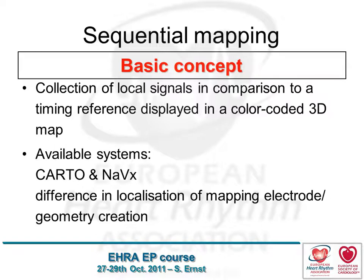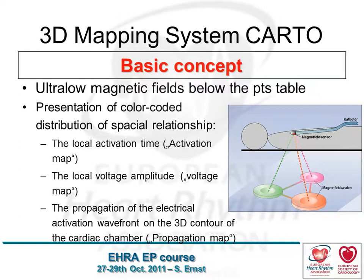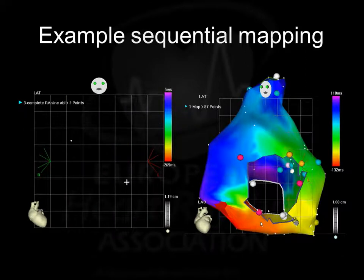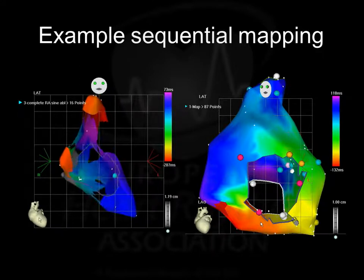With sequential mapping you need to collect local signals, which can be time-consuming, and you need to make a good judgment call on what you call your timing reference. You have several systems available — CARTO and NAVIX are the most well-known — and the real difference between them is only how you locate the mapping electrode. The initial CARTO concept used three magnetic fields with a sensor on the catheter, showing you like a GPS system where the catheter is. Since you have a second catheter on the back, you always see how the location has changed relative to it.